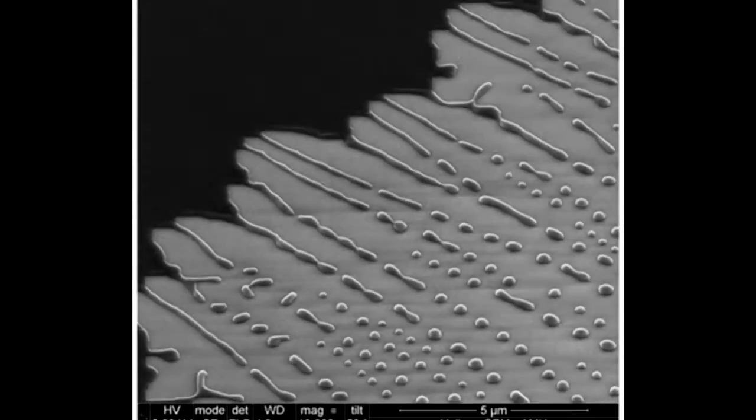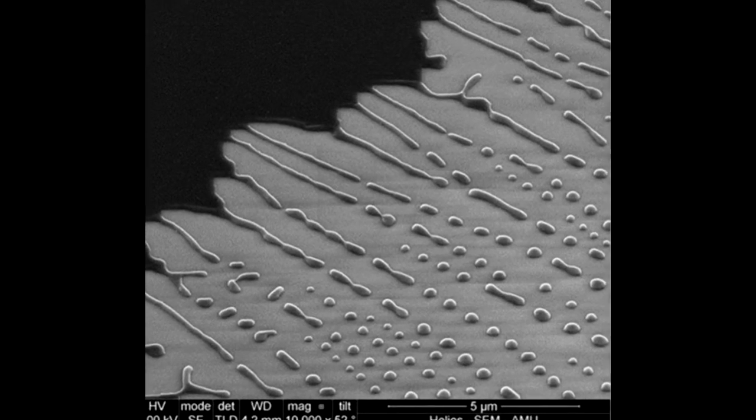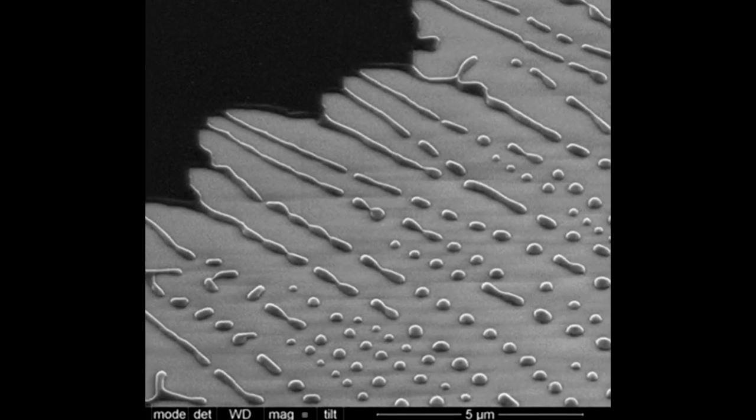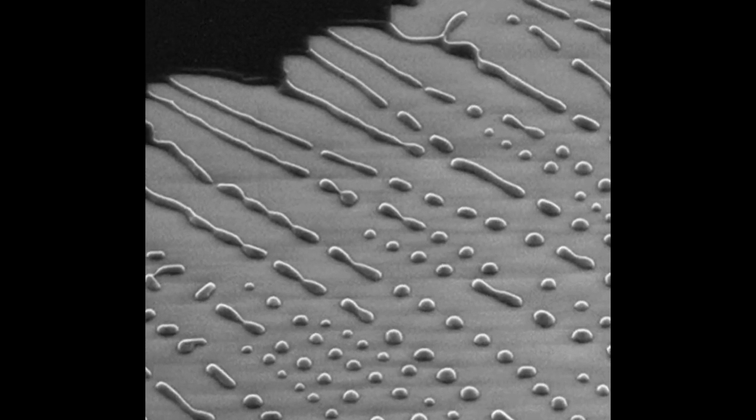Many inorganic and organic materials in the form of thin films have the tendency to break into tiny droplets when heated up at temperatures well below their melting point.